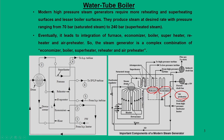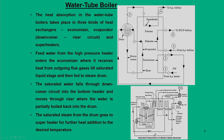All heating requirements are supplied by this steam generating unit. To summarize: feed water from the high pressure heater enters the economizer where it receives heat from the outgoing flue gases until it becomes saturated liquid, then is fed to the steam drum. The saturated liquid falls through the downcomer circuit into the bottom header and moves to the riser where water is partially boiled back to the drum. Finally, saturated steam from the drum goes to the superheater for further heat addition to the desired temperature.